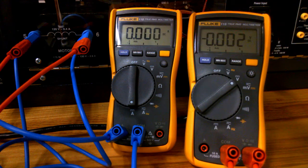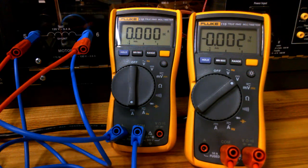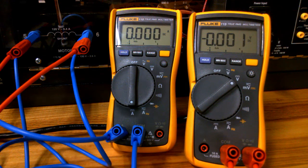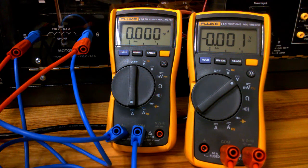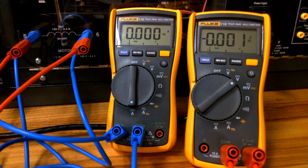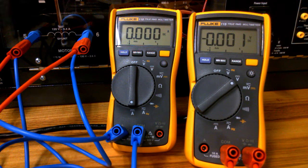Current meters, ammeters, are connected in line with what device you are examining. Voltage meters are connected in parallel with whatever element you are examining.